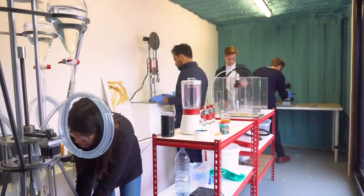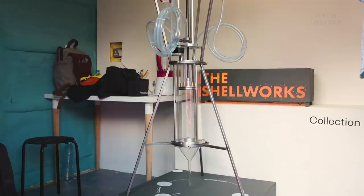What you need to do is extract the chitosan before you can use it as a bioplastic. So the first stage is an extraction, which is this machine behind me.